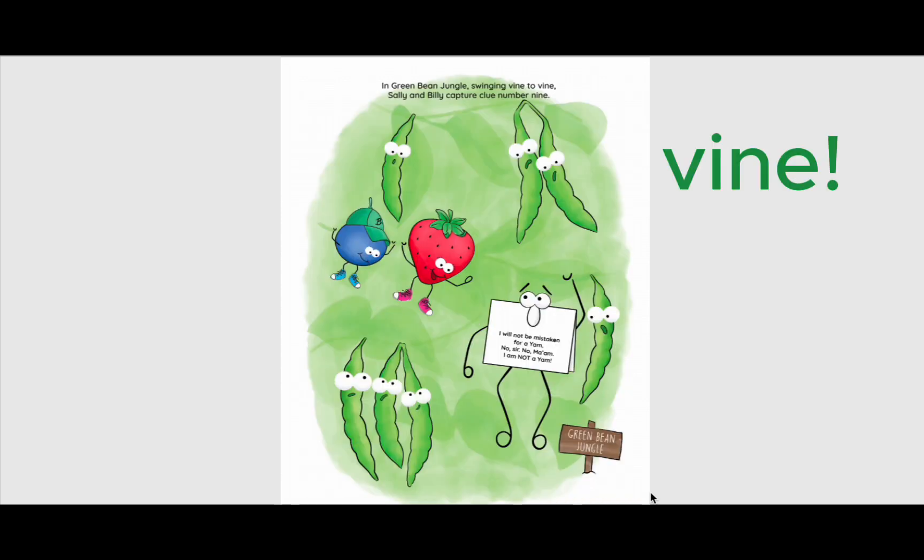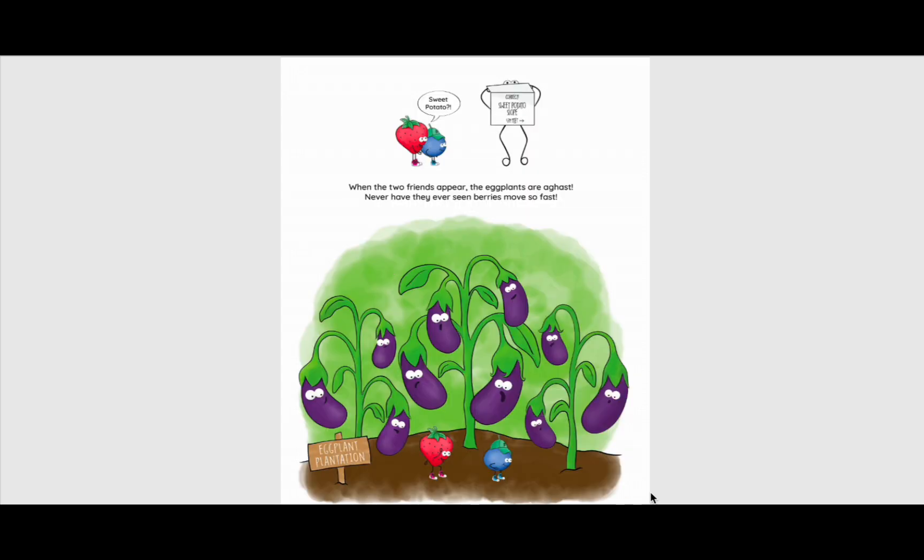In green bean jungle, swinging vine to vine, Sally and Billy capture clue number nine. I will not be mistaken for a yam. No, sir. No, ma'am. I am not a yam. Sweet potato. Correct. Sweet potato slope. When the two friends appear, the eggplants are aghast. Never have they ever seen berries move so fast.